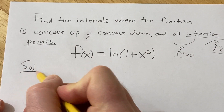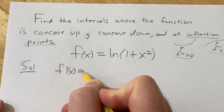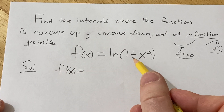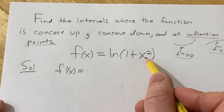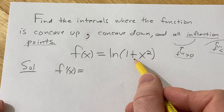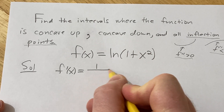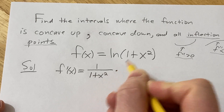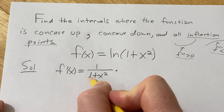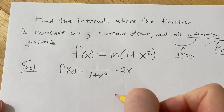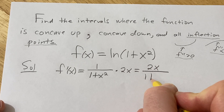Let's go ahead and work through it. We basically have to start by taking the first derivative. So f prime of x — the derivative of the natural log of x is 1 over x, but here it's the natural log of 1 plus x squared, so we have to use the chain rule because we have an inside function. It's 1 over 1 plus x squared times the derivative of the inside. The derivative of 1 is 0, the derivative of x squared is 2x. So this is equal to 2x over 1 plus x squared.